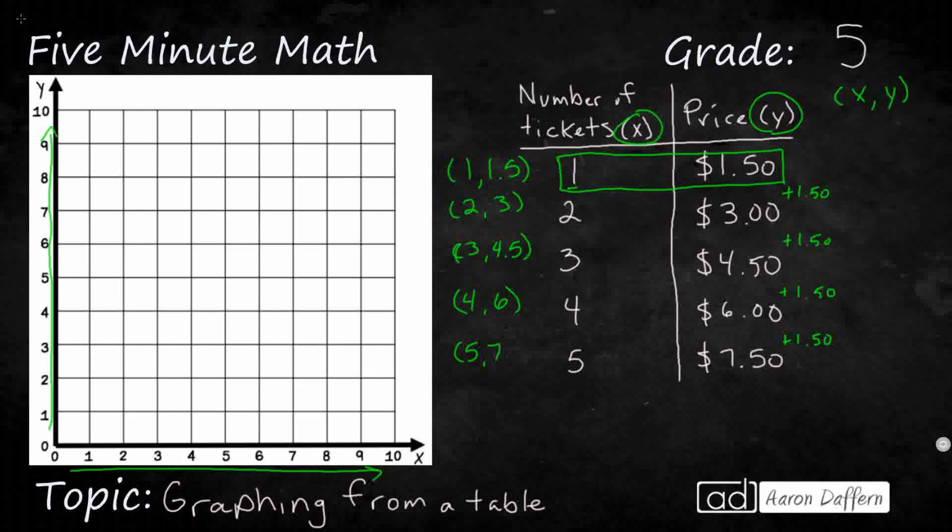All the odd ones have a decimal, so it's going to be 5 with my x value, 7.5 as my y value.